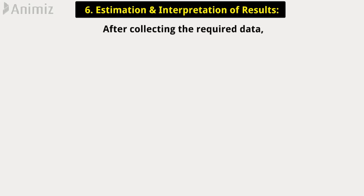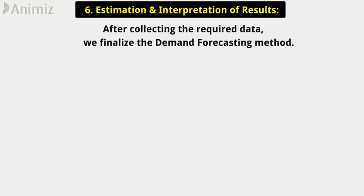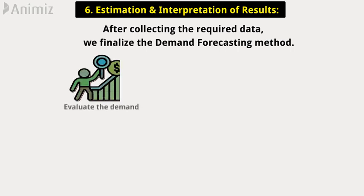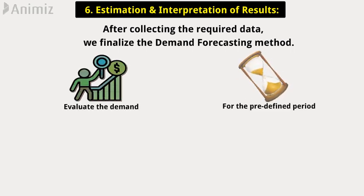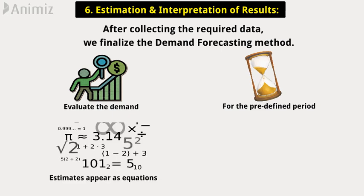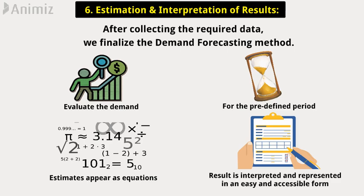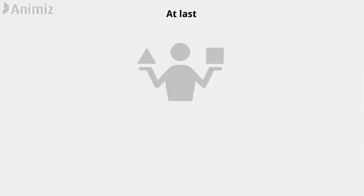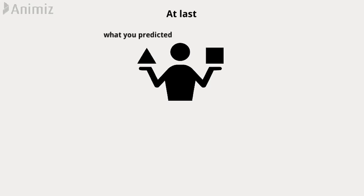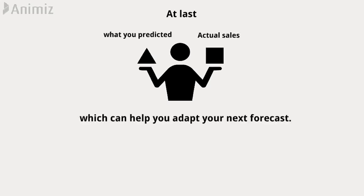The last step is estimation and interpretation of results. After collecting the required data, we finalize the demand forecasting method and evaluate the demand for the predefined period. Generally, the estimates appear as equations, and the result is interpreted and represented in an easy and accessible form. Finally, you compare what you predicted to actual sales, which can help you adapt your next forecast.